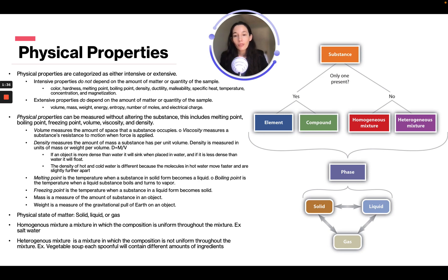The density of hot and cold water differs because molecules in hot water move faster and are slightly further apart. Melting point is the temperature when a solid becomes a liquid, boiling point is when a liquid turns to vapor, and freezing point is when a liquid becomes solid.